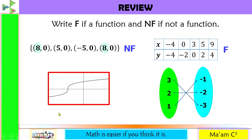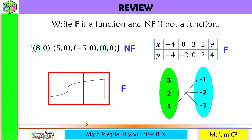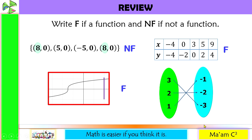This one is a graph, so let us make use of the vertical line test. Let us move the vertical line on any part of the graph. Since it intersects the graph at only one point, therefore this is a function. For the last one, we have a map. All values of x are mapped to a number in the second group, and each x value is mapped to only one value in the second group. So therefore, this is a function.